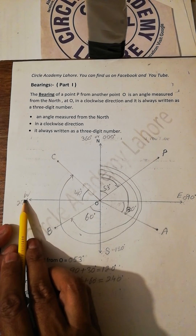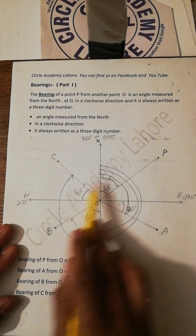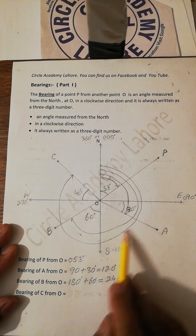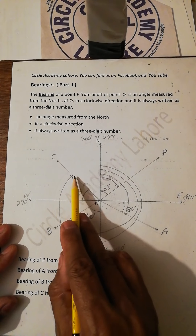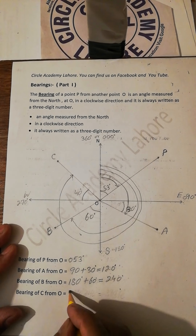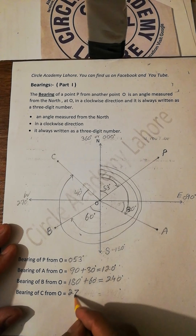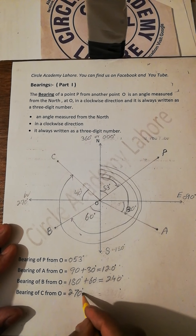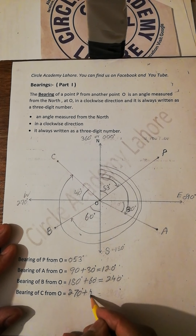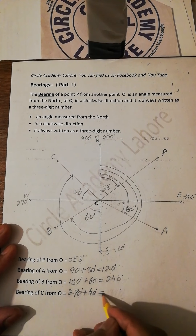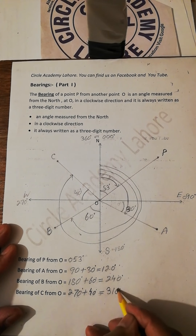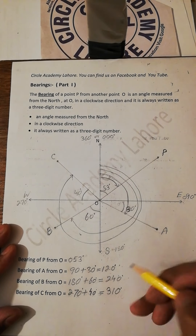The bearing of west from north is 270. So 270 plus 40 degrees — the total is 310 degrees.